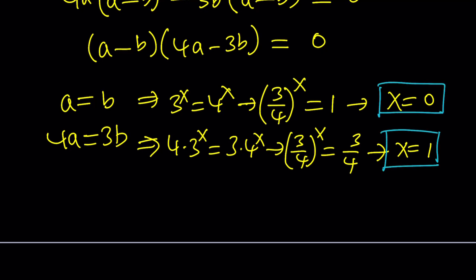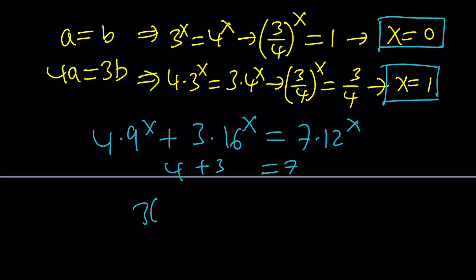And there are no other real solutions, of course, right? So x equals 0 or x equals 1. And if you go ahead and actually check the original problem, you're going to notice that those are solutions. Because if you think about it, x equals 0 is probably obvious because 4 plus 3 is equal to 7. But if you think about x equals 1, that should give you 36 plus 48 equals 84, which is, of course, true. Make sense? Okay, great. So those are the two real solutions.